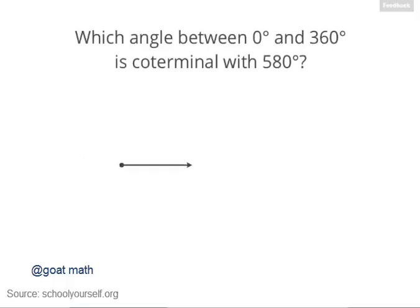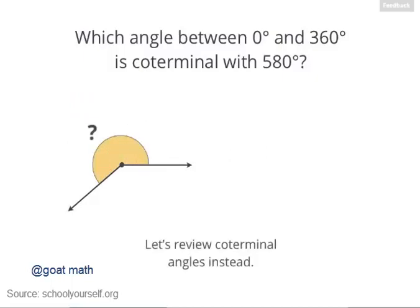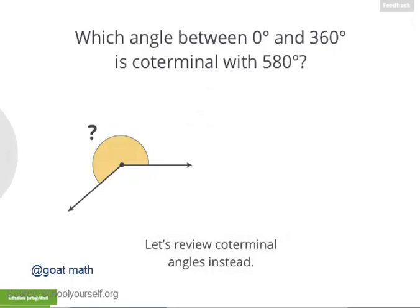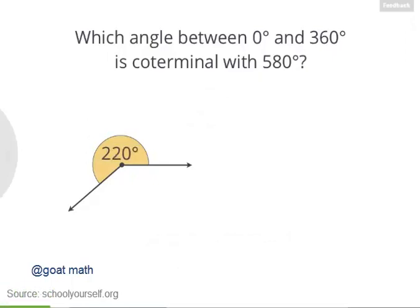To get started on this lesson, do you know which angle between 0 and 360 degrees is coterminal with 580 degrees? Here's a 580 degree rotation, and it's coterminal with this angle over here. If you're not sure, click down here to review coterminal angles instead. 580 degrees is coterminal with 220 degrees — you get that by subtracting a full rotation of 360 degrees. In this lesson, we'll be looking at how trig functions of coterminal angles are related, and we'll start by looking at 220 degrees.